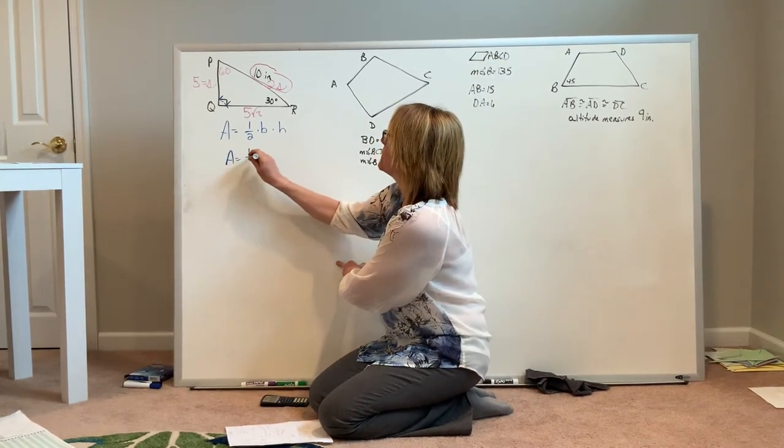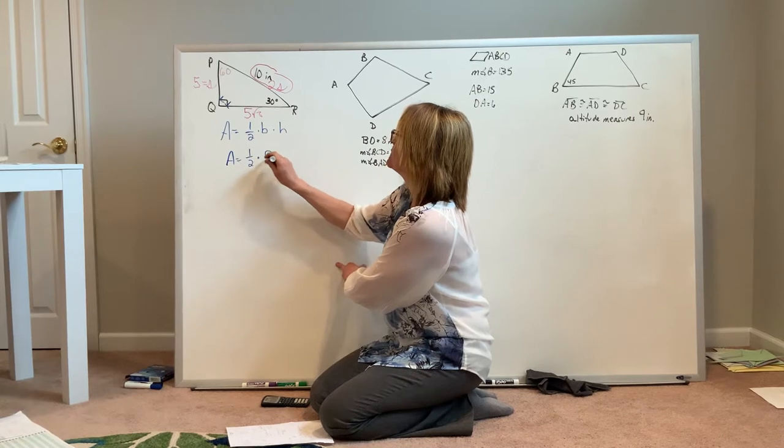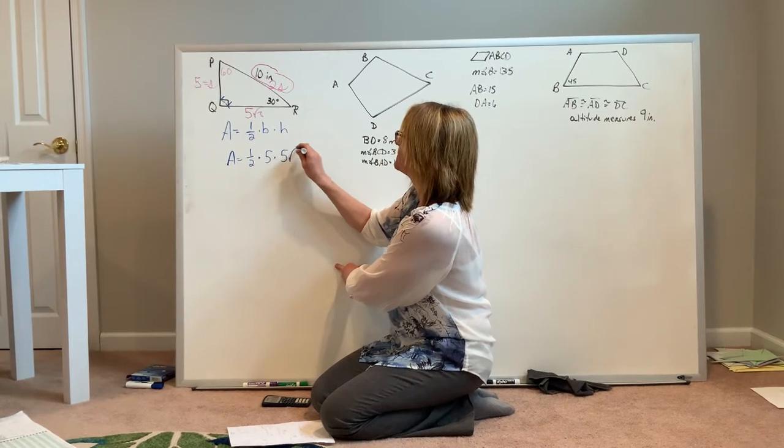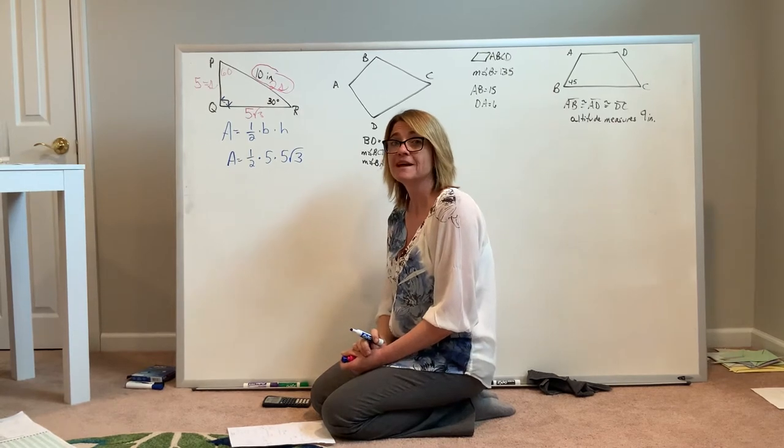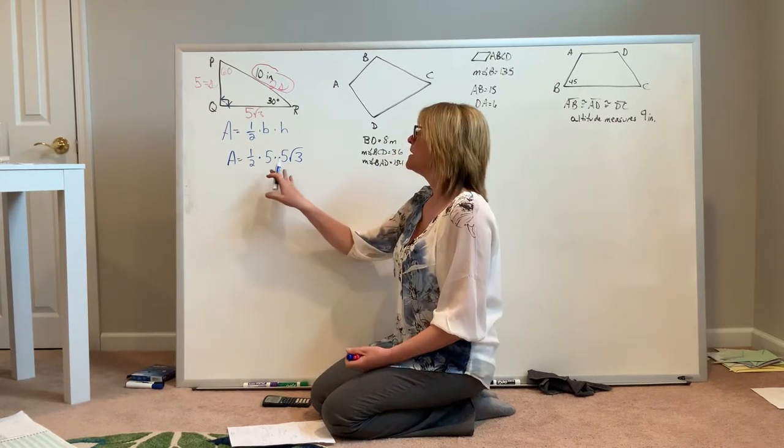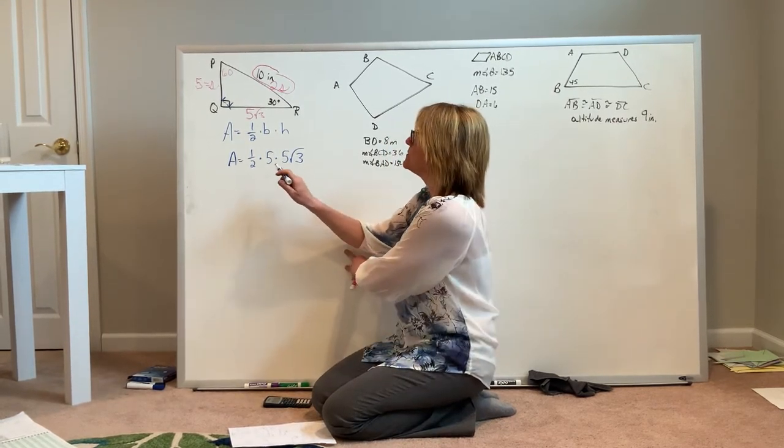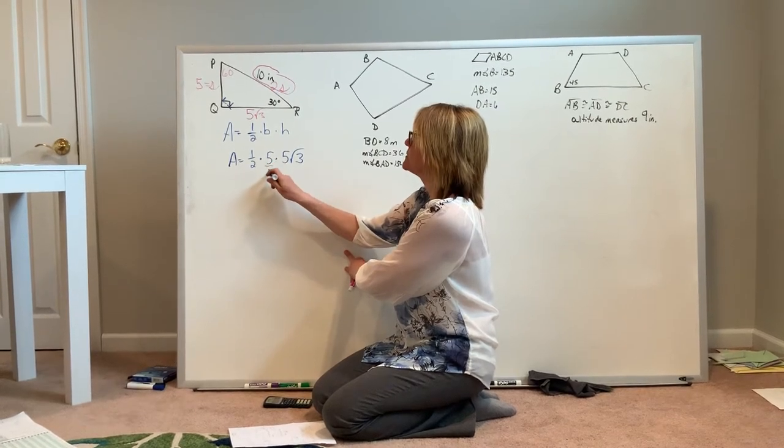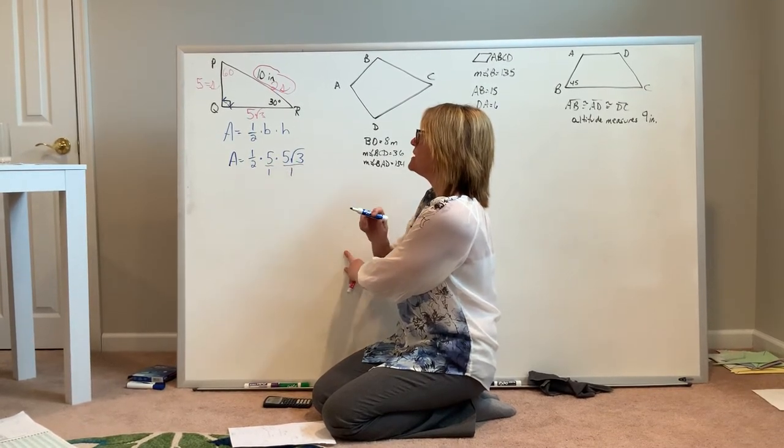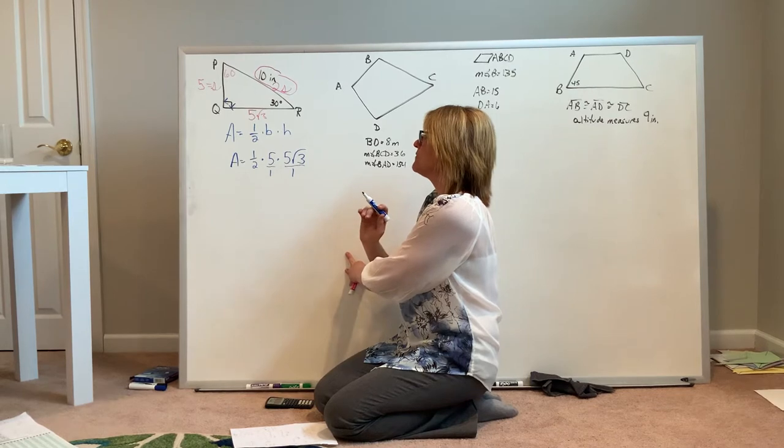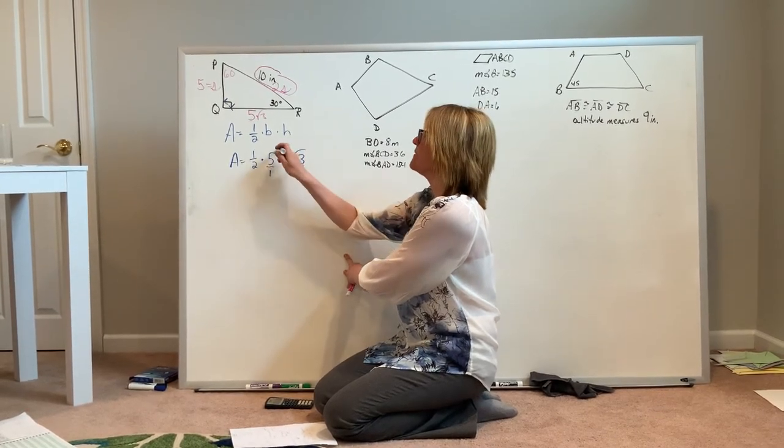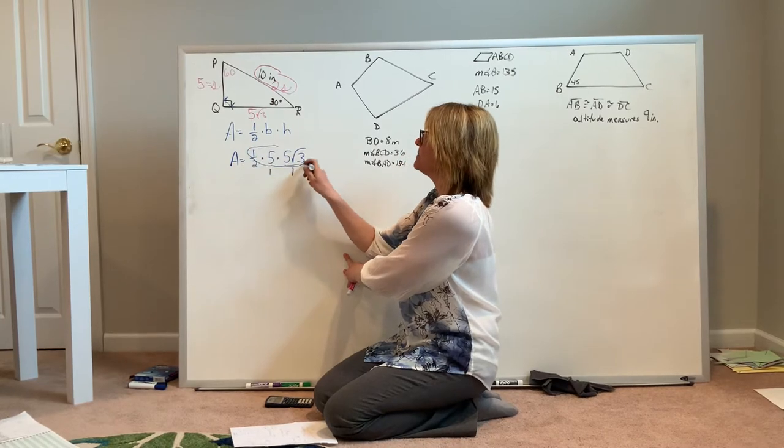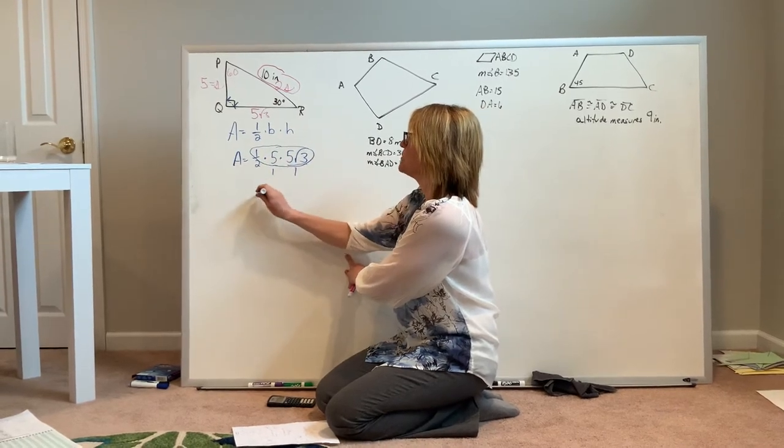Area is equal to one half times 5 times 5 square root of 3. Now if you've already written down 12.5 square root of 3, not proper form, because one of our rules with square roots says we're not allowed to use decimals. The easiest way to avoid this is just leave everything in fraction form, showing that anything that wasn't already a fraction has a denominator of 1.